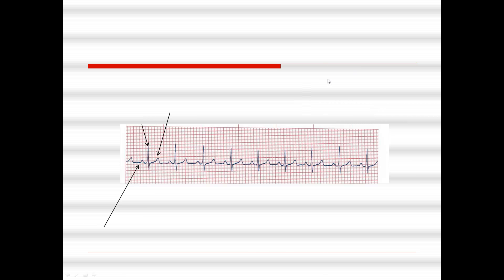Let's look at this one. Do we have a P wave in front of a QRS and a T? And does that follow through on each one? It looks regular — these look like they're nice and even. This is a normal sinus rhythm, normal sinus, because we have a P, QRS, T. What is the beats per minute on this one?